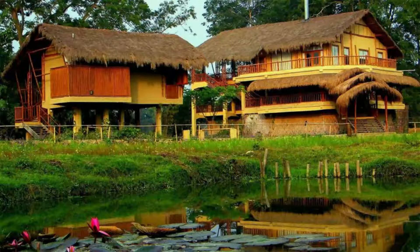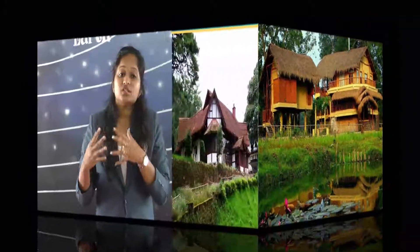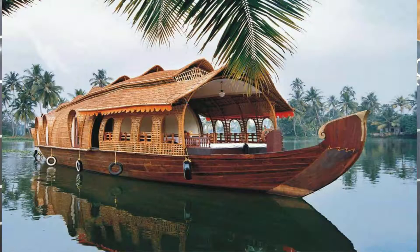Let's see the different types of houses found in different states of India. The first type is Ikra houses. We can see this type of house usually in Assam, so they are also called Assam-type houses. They are made up of bamboo sticks, cement, and mud.